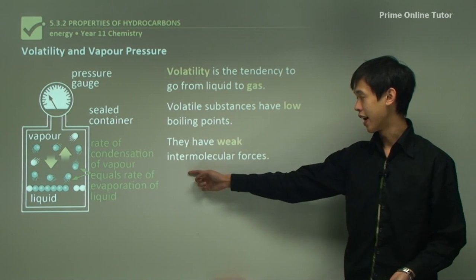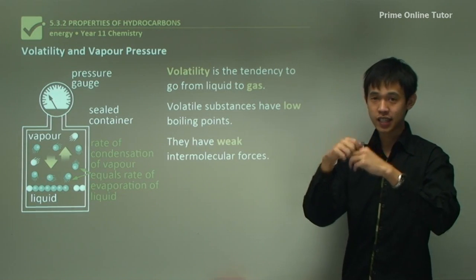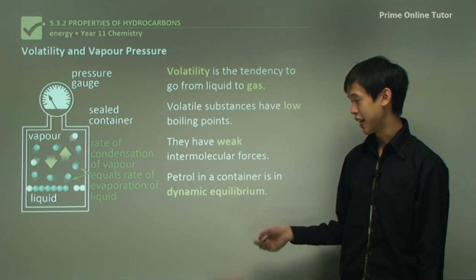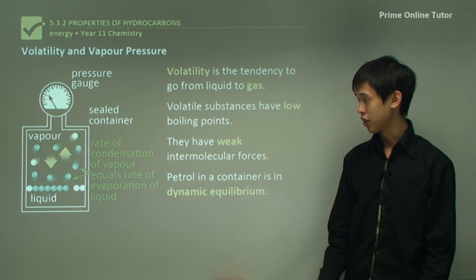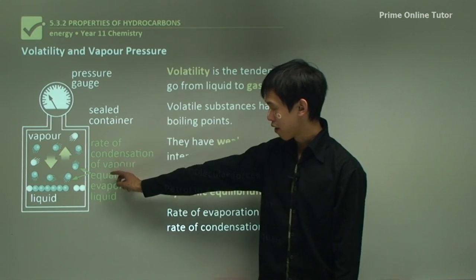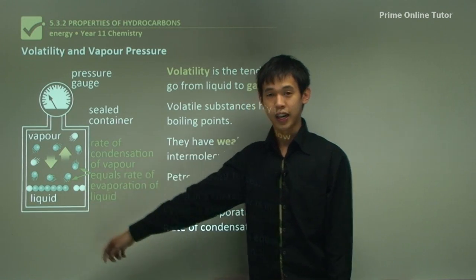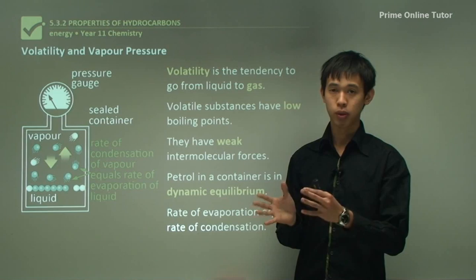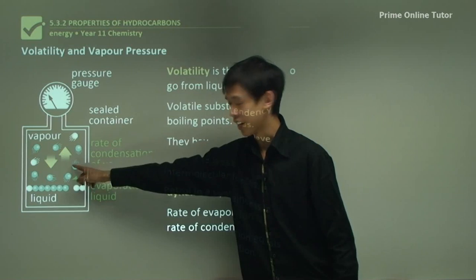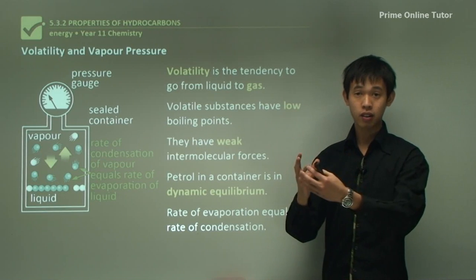Volatile substances generally have weak intermolecular forces because when they're in liquid form they're being weakly bound to each other, so they can easily fly off into the gas phase. Petrol in a container is what we call a dynamic equilibrium — the rate of evaporation equals the rate of condensation. The amount of molecules that fly off into the gas phase is equal to the amount going back to liquid. We see it as just a liquid sitting there, but what's really happening at the molecular scale is that molecules are flying off and others are filling the space — it's changing very rapidly even though from our perspective nothing appears to change.